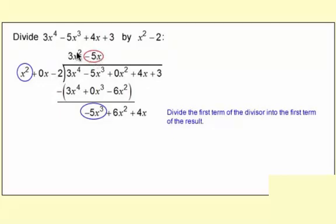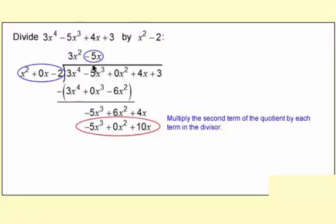So far, these are going to be two terms of the quotient. So then to keep going with the process, multiply this -5x² by these three terms, and your result goes down here. So -5x times x² is -5x³, and so on. Multiply the other terms, and you can see the results there.